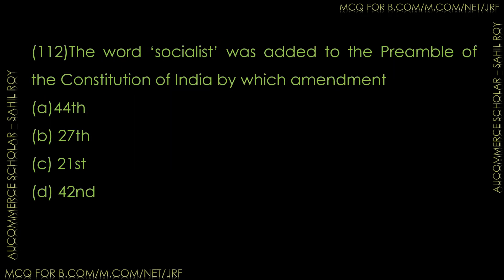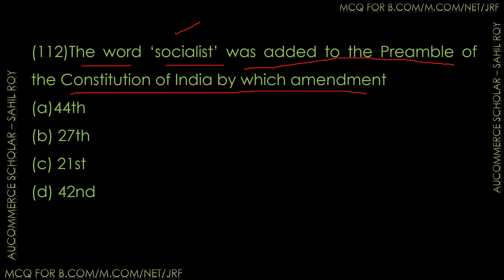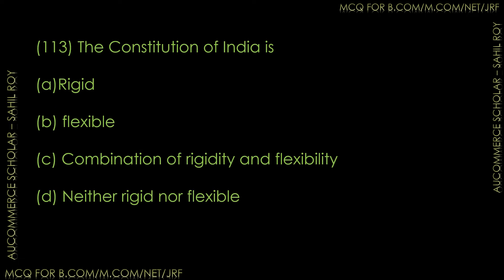Question number 112: The word 'Socialist' was added to the Preamble of the Constitution of India by which amendment? Options: 44th Amendment, 27th Amendment, 21st Amendment, or 42nd Amendment. The correct answer is Option D — the 42nd Amendment. The word 'Socialist' was added to the Preamble of the Constitution of India by the 42nd Amendment.